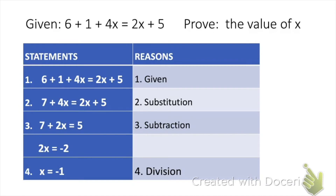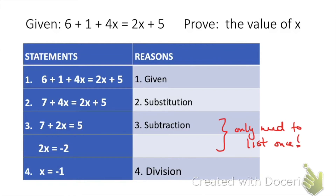In the third example, it's just asking us to prove the value of x, so we need to solve for the variable but aren't told what the answer should be — so we need to be careful with our math. In step 2, we combined the 6 plus 1, which is substitution. It's okay to write 'combined like terms' as the reason, but it really is the substitution property. In step 3, even though there are two lines for the statement — subtracting 2x from the right to the left side, then subtracting the 7 to the right side — it's still only one reason since it's all the same property: subtraction on both sides. Then the final step, dividing both sides by 2, is a new property — the division property — so it gets its own line.